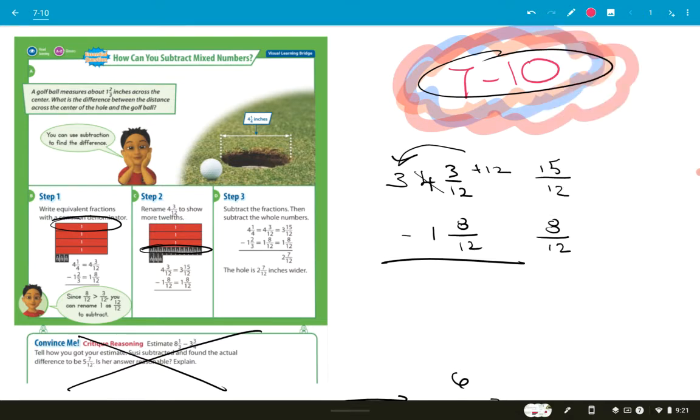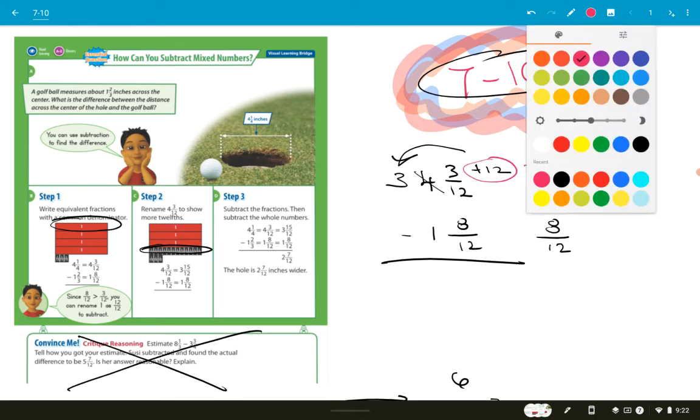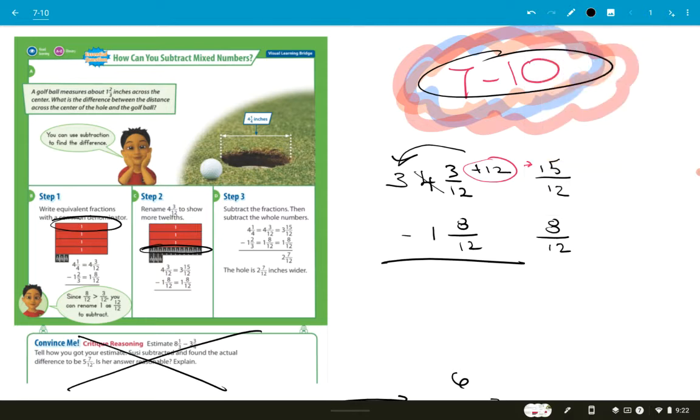When we borrow, the denominator stays the same. It's 12. That doesn't change. But what you would add was the 12 on top, and then you'd end up with 15. So now we can subtract. 8 from 15, what's the answer? 7. 7 twelfths. Now we can go ahead and do this. What's 1 from 3? 2. There's your answer.